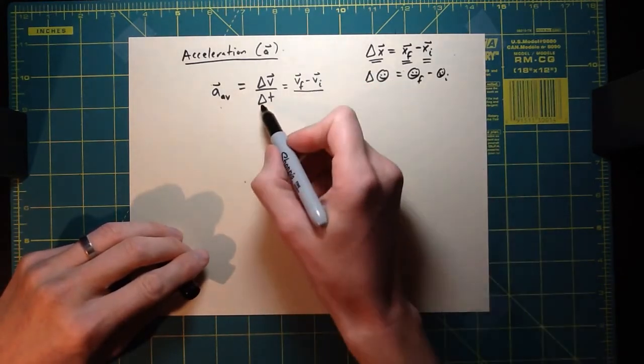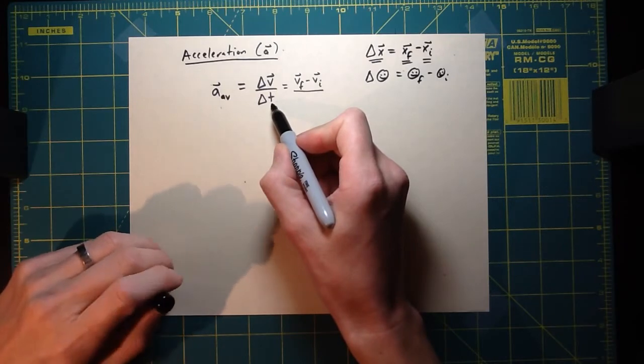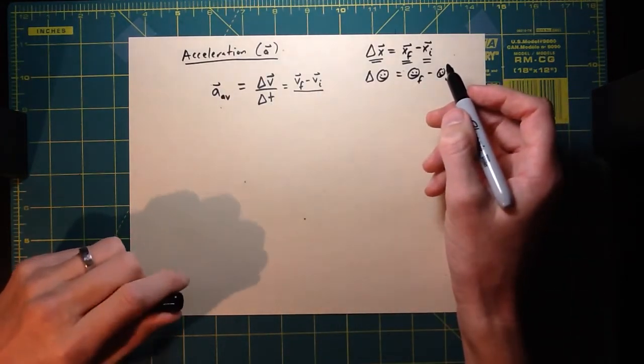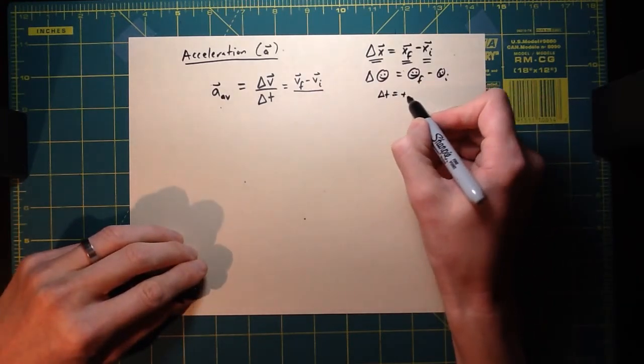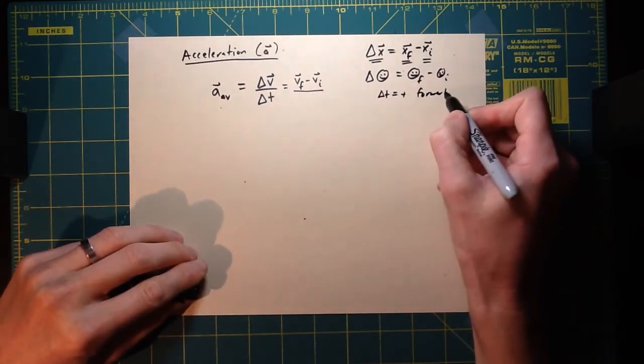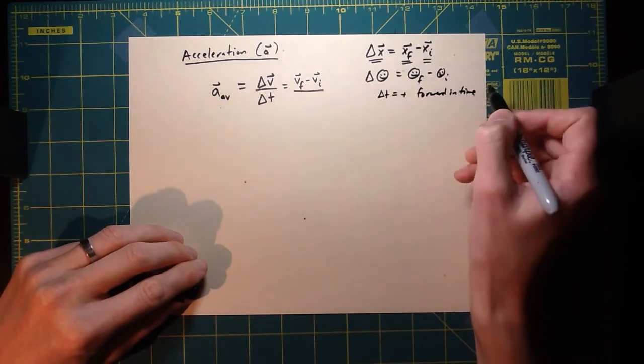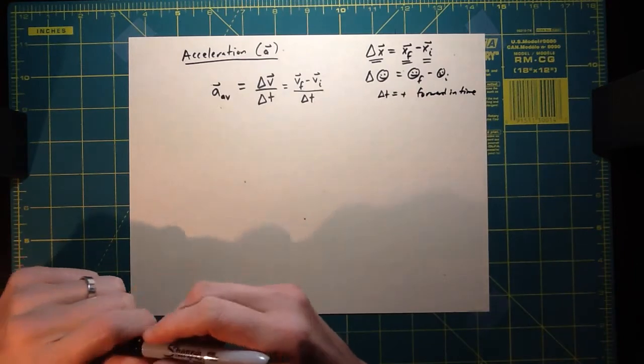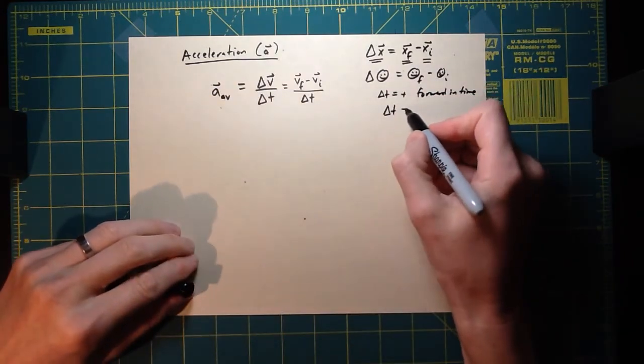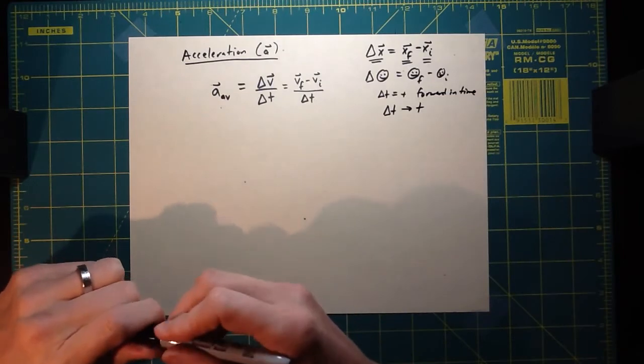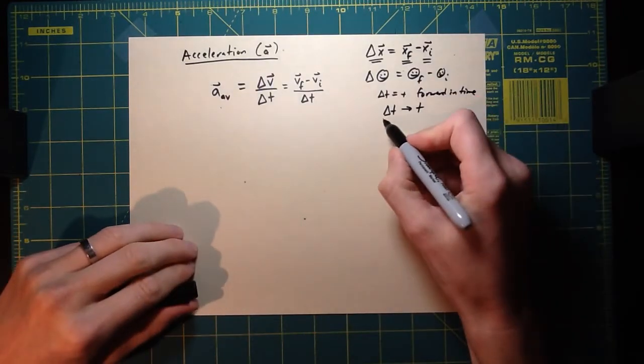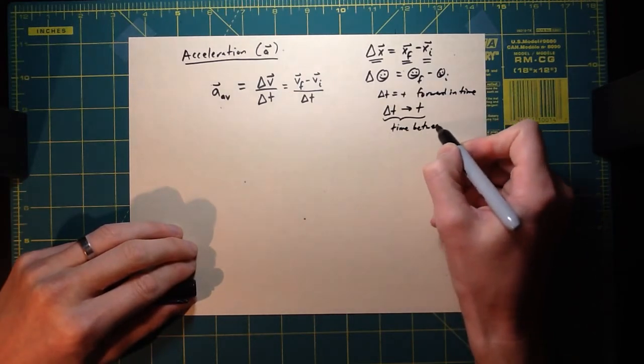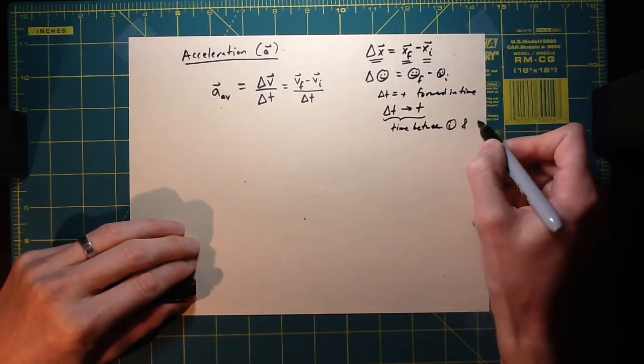You might wonder why we don't break delta T up into T final minus T initial. Well the only reason we do that is because delta T is always positive anyway because you go forward in time. And so for that reason we leave it as delta T there's nothing exciting happening there and in fact very shortly we're just going to not even bother to do that. We're just going to call it T, T being the time taken. So whether or not we call it delta T or T it's the time between what we're calling the initial point and the final point.